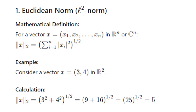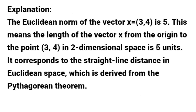Example: consider a vector x equals (3, 4) in ℝ². Calculation: the L2 norm of x equals (3² + 4²)^(1/2) equals (9 + 16)^(1/2) equals 25^(1/2) equals 5. Explanation: the Euclidean norm of the vector x = (3, 4) is 5. This means the length of the vector from the origin to the point (3, 4) in two-dimensional space is 5 units, corresponding to the straight-line distance in Euclidean space derived from the Pythagorean theorem.